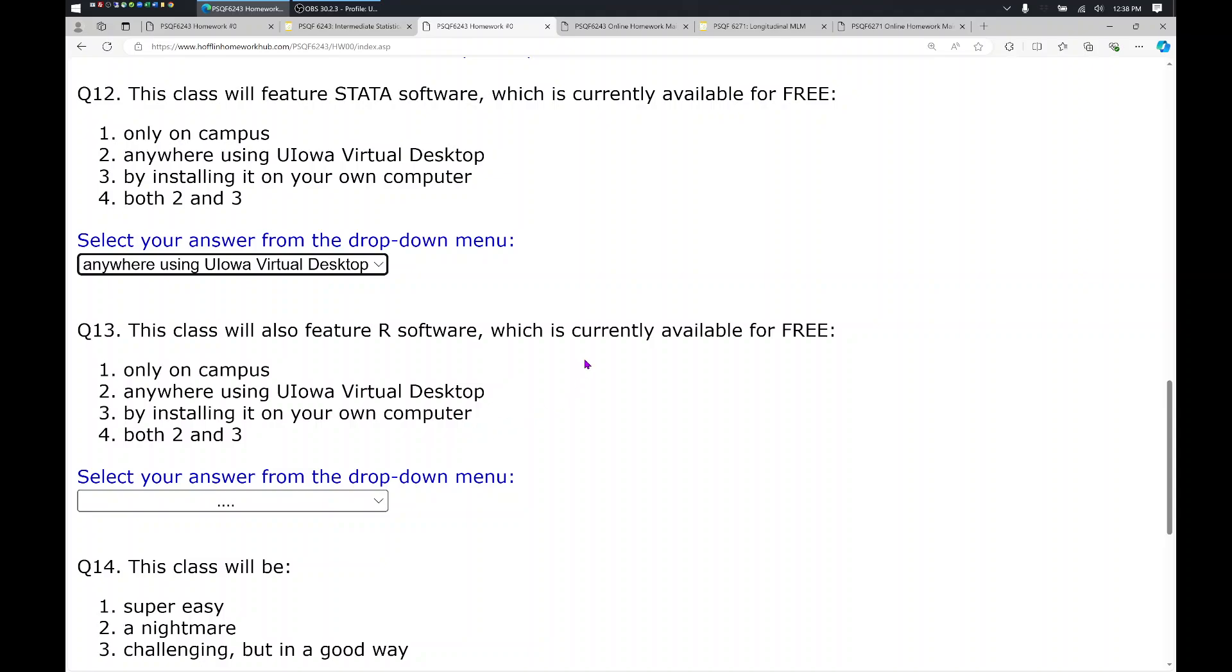We will also use R, which is available for free everywhere. That is the point of using R is that it is free and open source. So the correct answer to this would be both two and three. It is on the virtual desktop, although it runs very slowly there, and I would not recommend that. I would recommend installing it on your own computer instead.